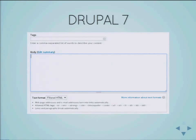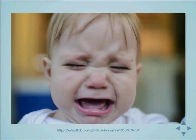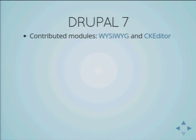Let's start with Drupal 7. The default WYSIWYG editor in Drupal 7 is very simple — it has no bugs, but it's quite bare. Thankfully there are contrib modules to add functionality on top of core. You actually have two good options in Drupal 7: the WYSIWYG module and the CKEditor module.